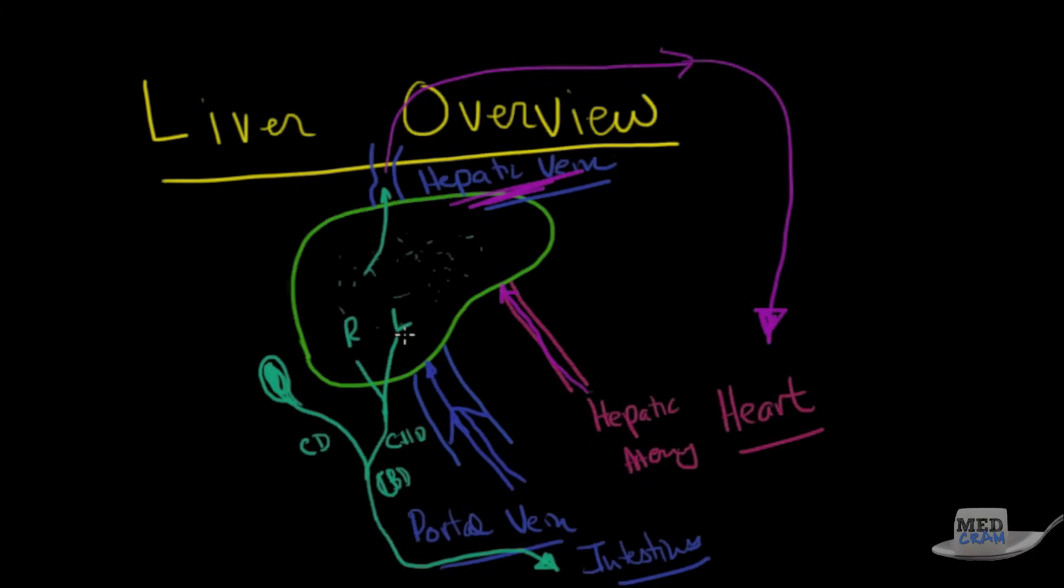Of course, the exocrine functions are it produces bile. Bile are these things that break down fats, what makes your poo look brown. And 50% of it approximately is stored in the gallbladder at each meal, so it can be ejected into the cystic duct, into the common bile duct, and then into the duodenum, so it can help in aiding in digestion.